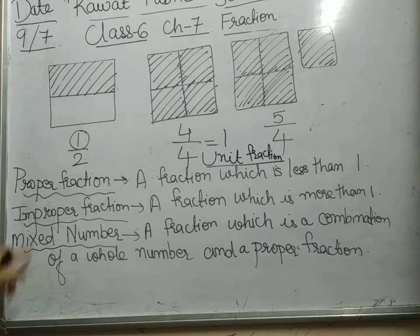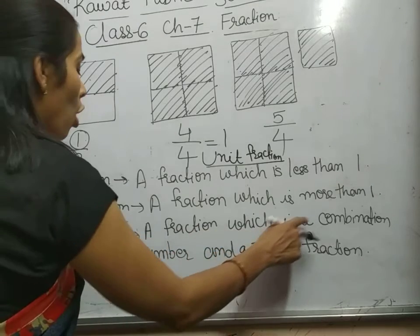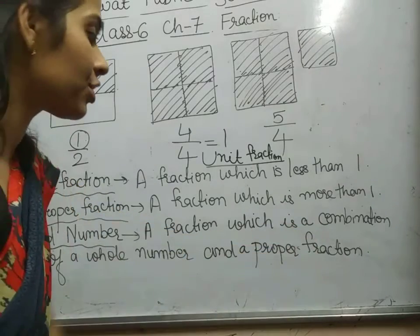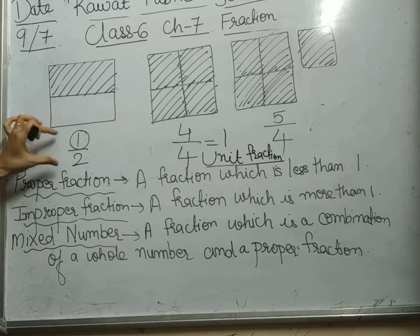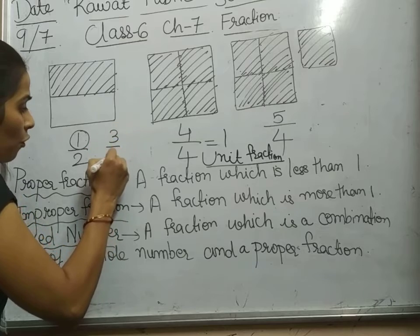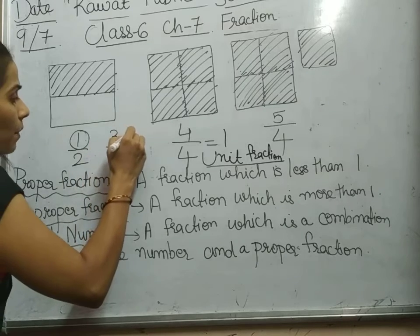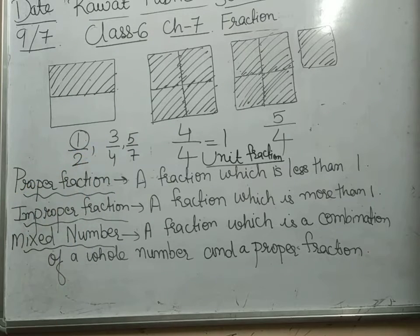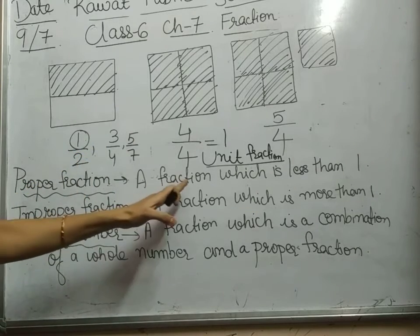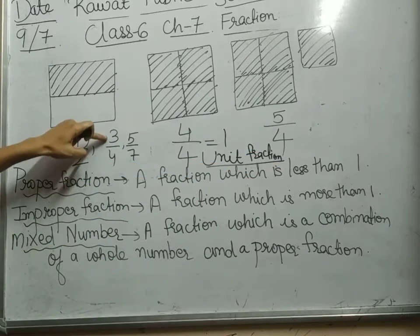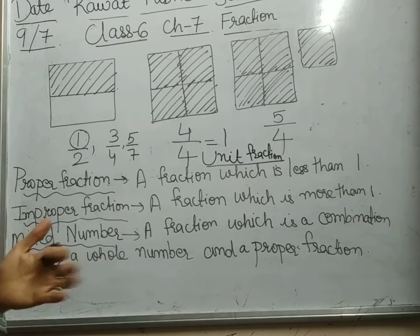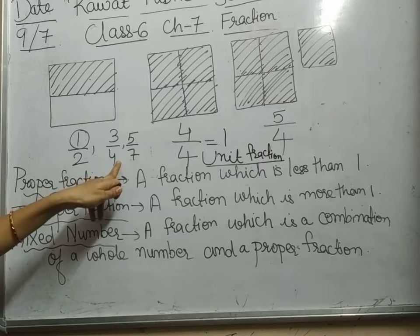Now, we will talk about mixed fraction. A fraction which is a combination of a whole number and a proper fraction. We can take examples like one by two, three by four, or five by seven. They are all proper fractions because a proper fraction is less than one. If you divide three by four, your answer will be zero point something, which is less than one.